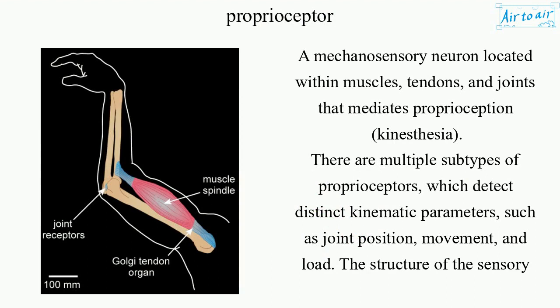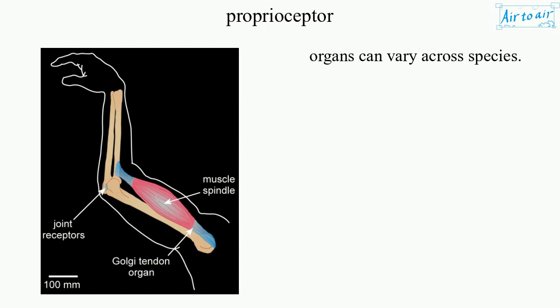There are multiple subtypes of proprioceptors, which detect distinct kinematic parameters such as joint position, movement, and load. The structure of the sensory organs can vary across species.